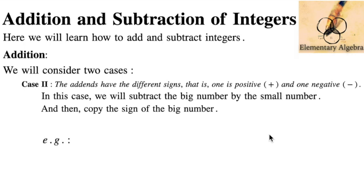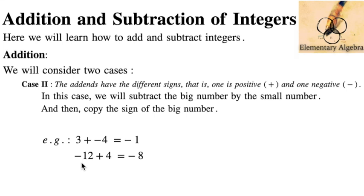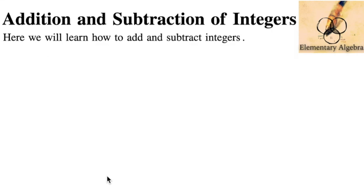For example: 3 plus negative 4. Which one is bigger? Clearly 4, so it's 4 minus 3, which equals 1. The sign of the big number is negative, so the answer is negative 1. Another example: negative 12 plus 4. The bigger number is 12, so 12 minus 4 is 8. The sign of the bigger number is negative, so the answer is negative 8. And negative 9 plus 15: the bigger number is 15, so 15 minus 9 is 6. Since 15 has no negative sign, the answer is positive 6.